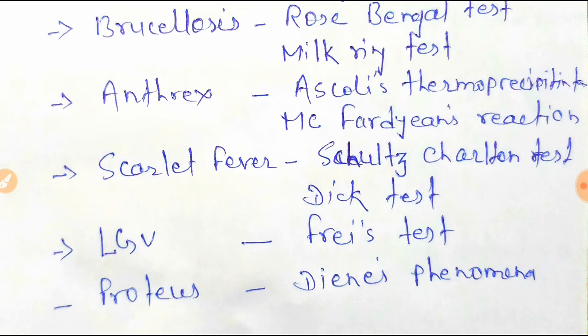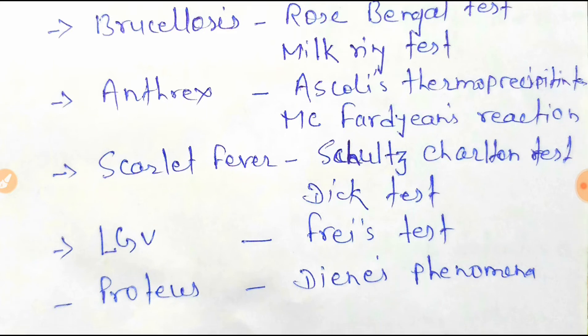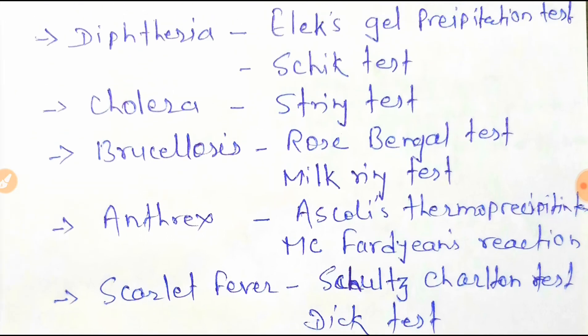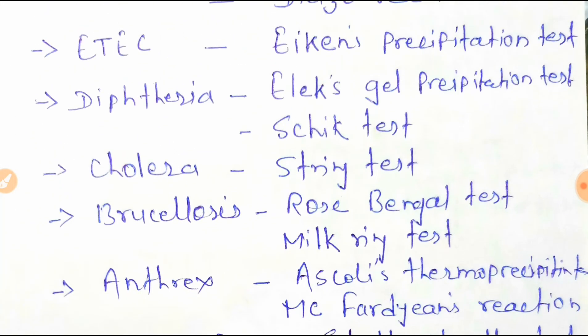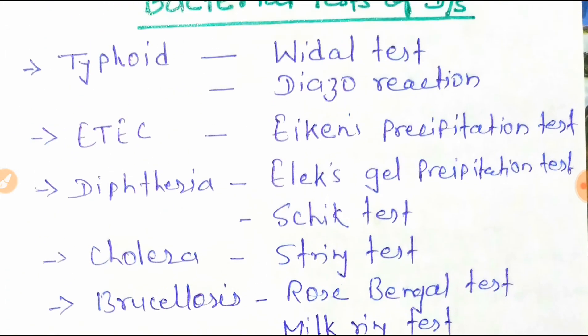Next, LGV uses the Frei test and Prausnitz-Küstner phenomenon. Here is the trick: for ETEC, it is the Elek precipitation test — remember 'EC EC is Elek precipitation test.'